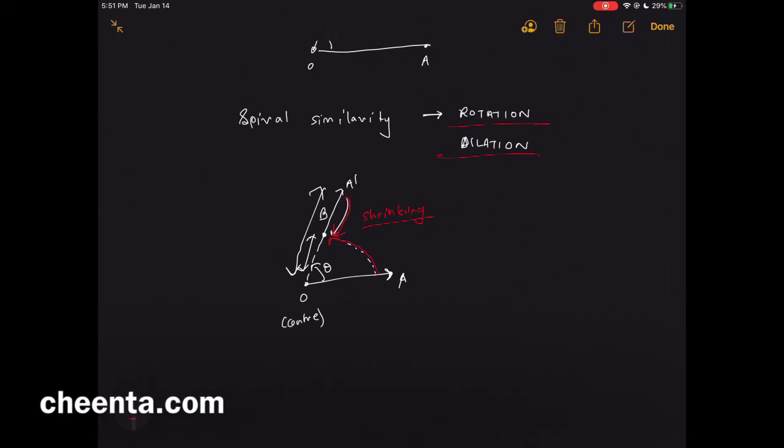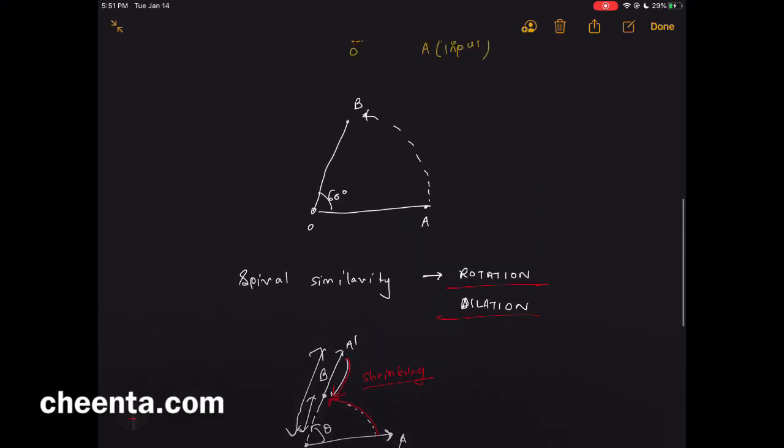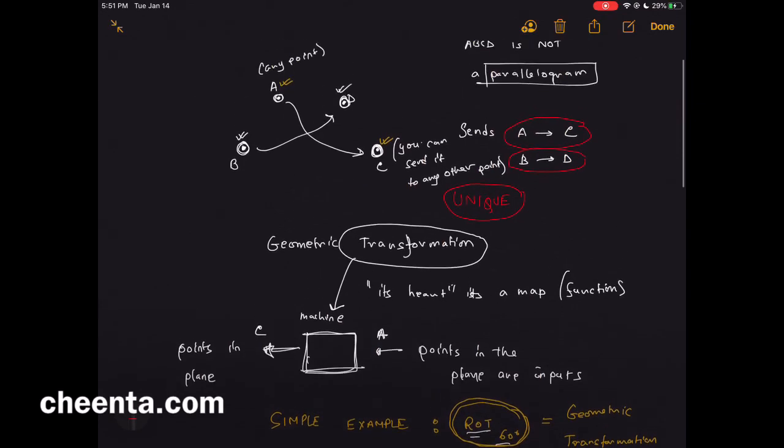Intuitively it should be clear why this should work. If you are allowed to rotate and if you are allowed to shrink or expand, you should be able to reach from any point to any other point. Simultaneously you can send B to D. That's a bit surprising. Anyway, the key question is: what is the center of spiral similarity?